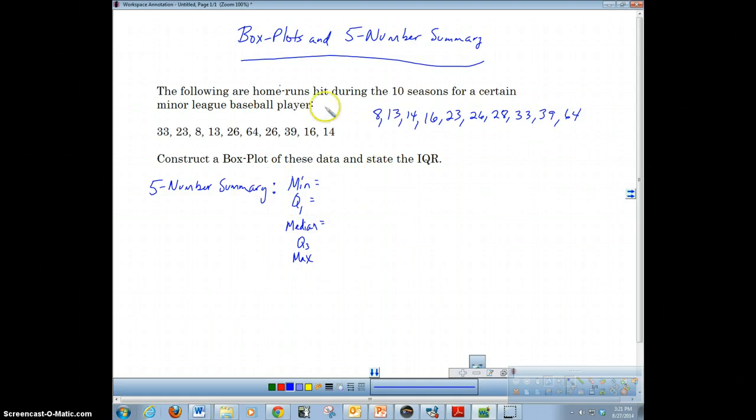So how do we do that? We'll do this by hand. We got 10 things. To find the median, we're going to go to the middle. That's going to be right in here. So we're going to take 23 plus 26 and divide that by 2, and that's going to give me 24.5. So my median is 24.5. My min is 8. My max is 64.